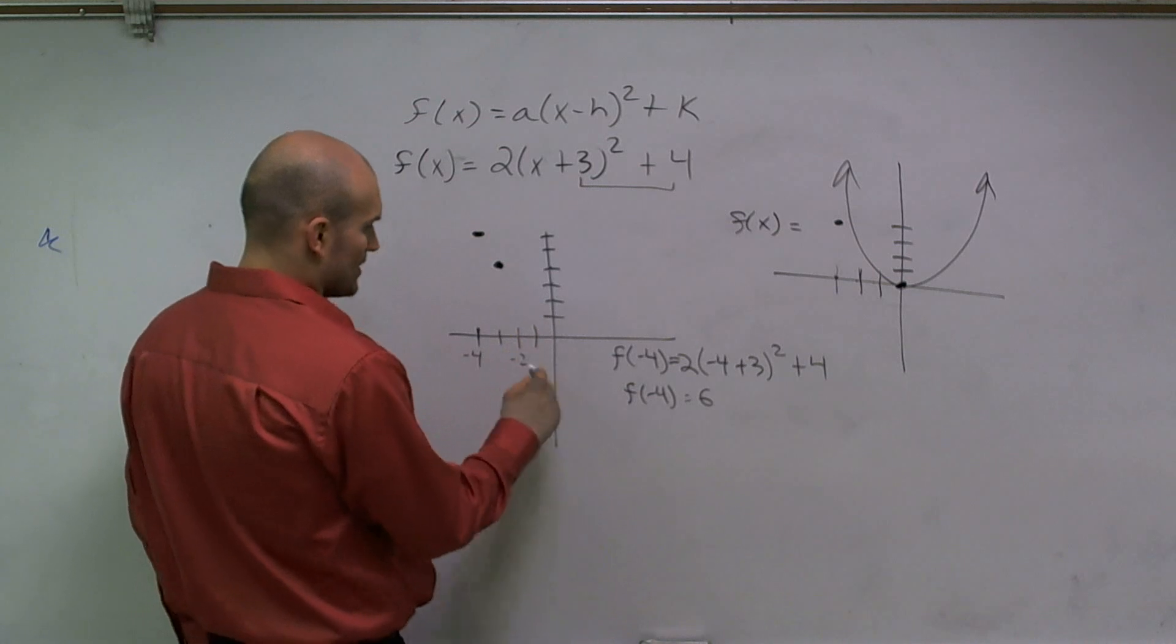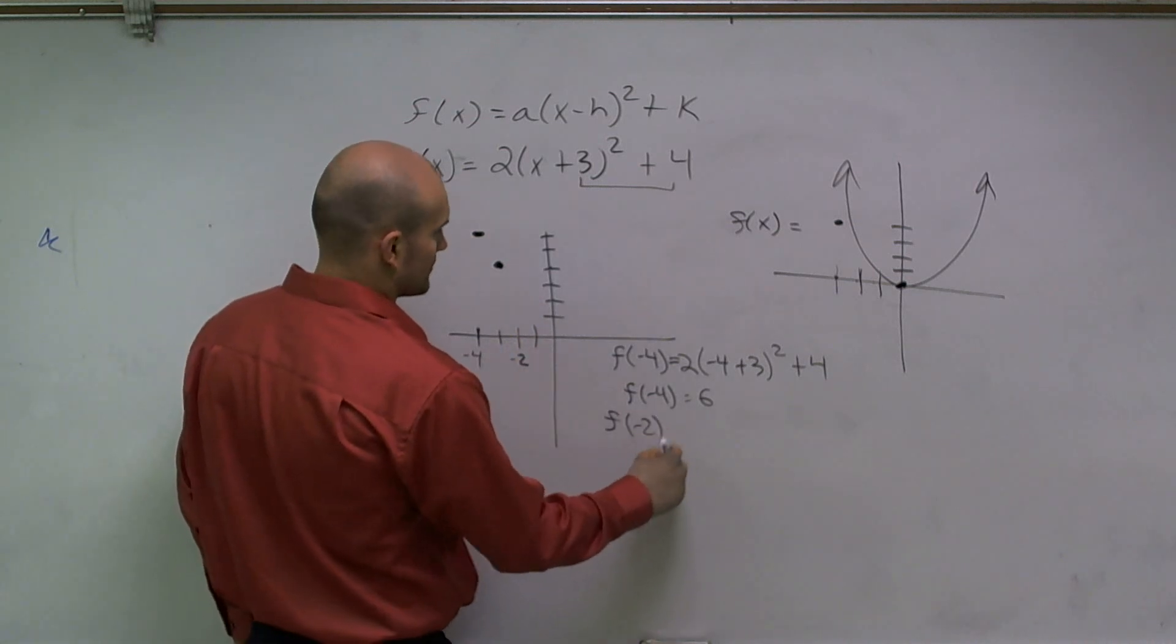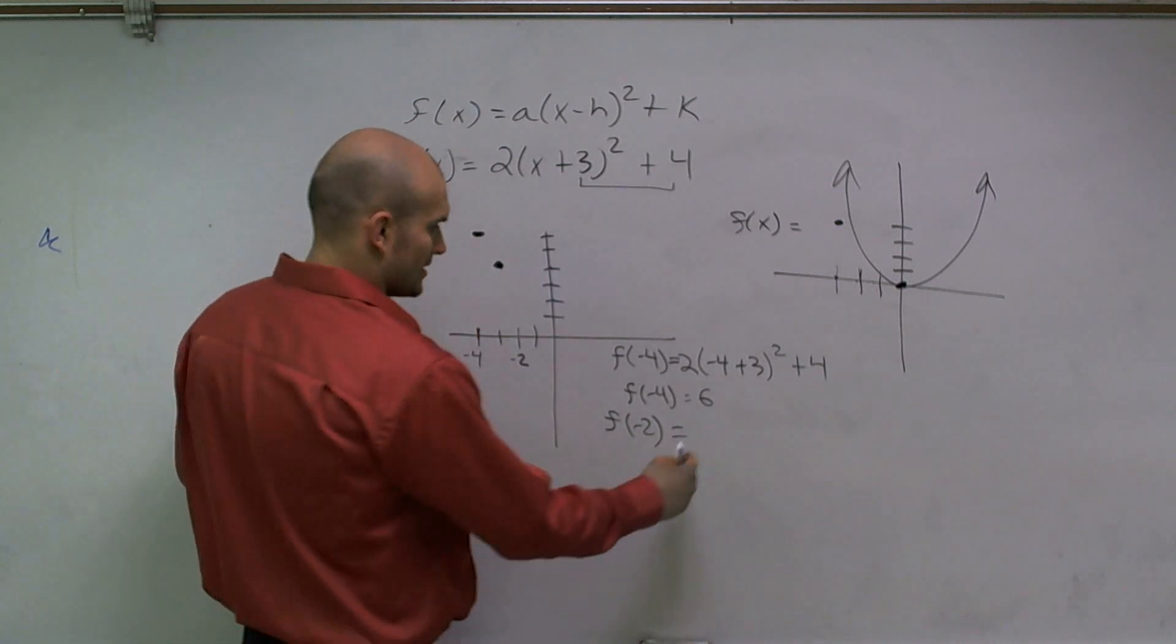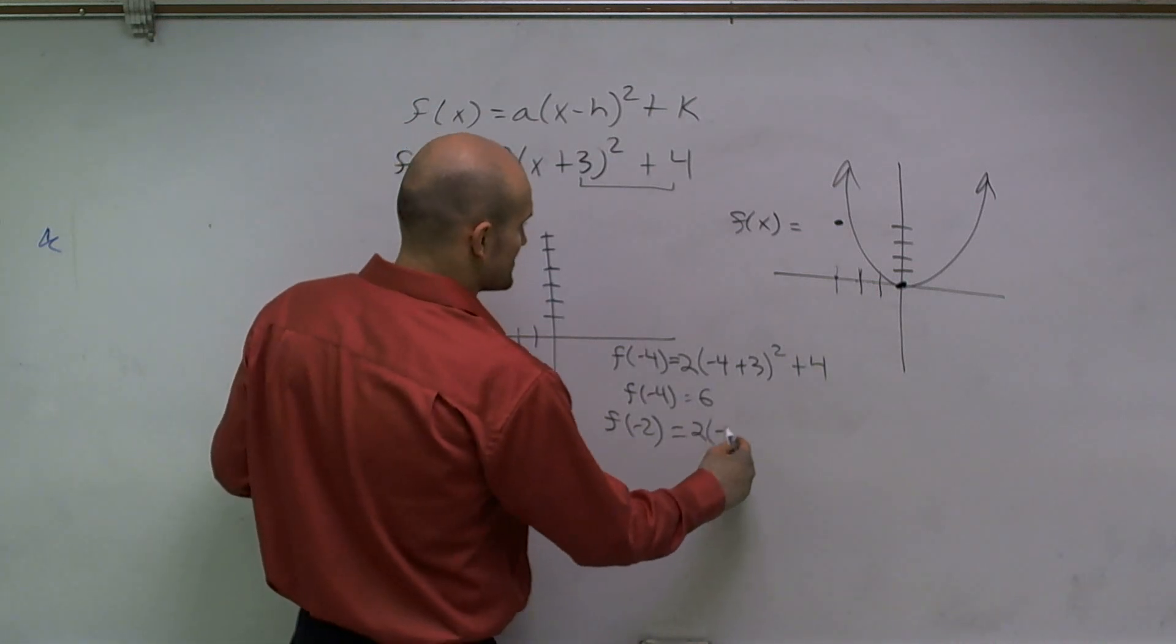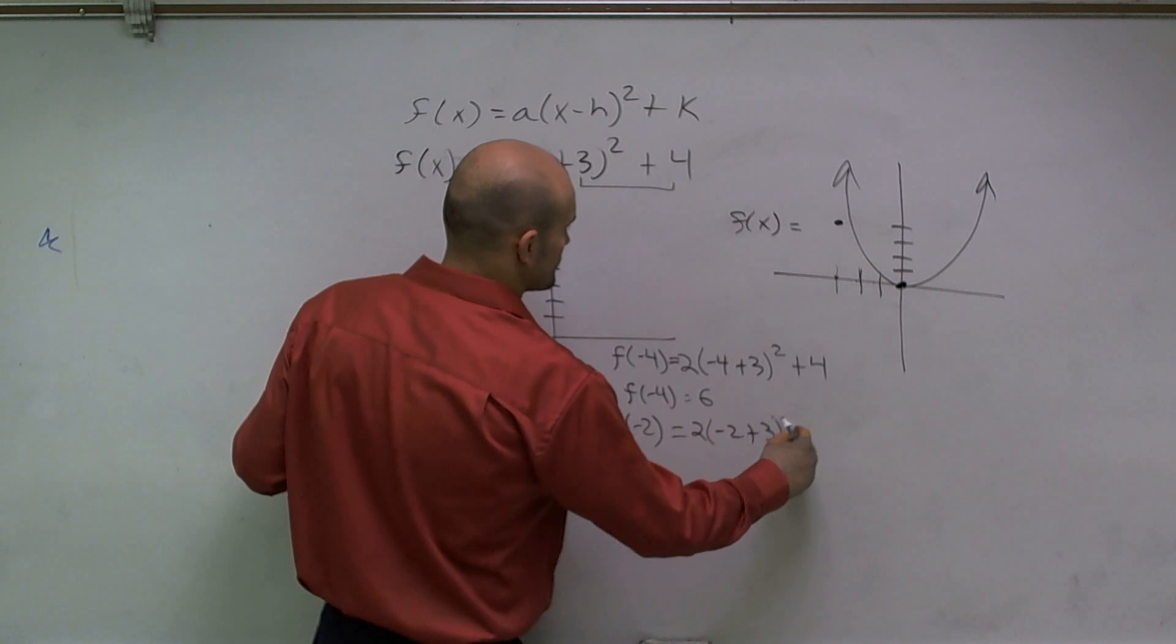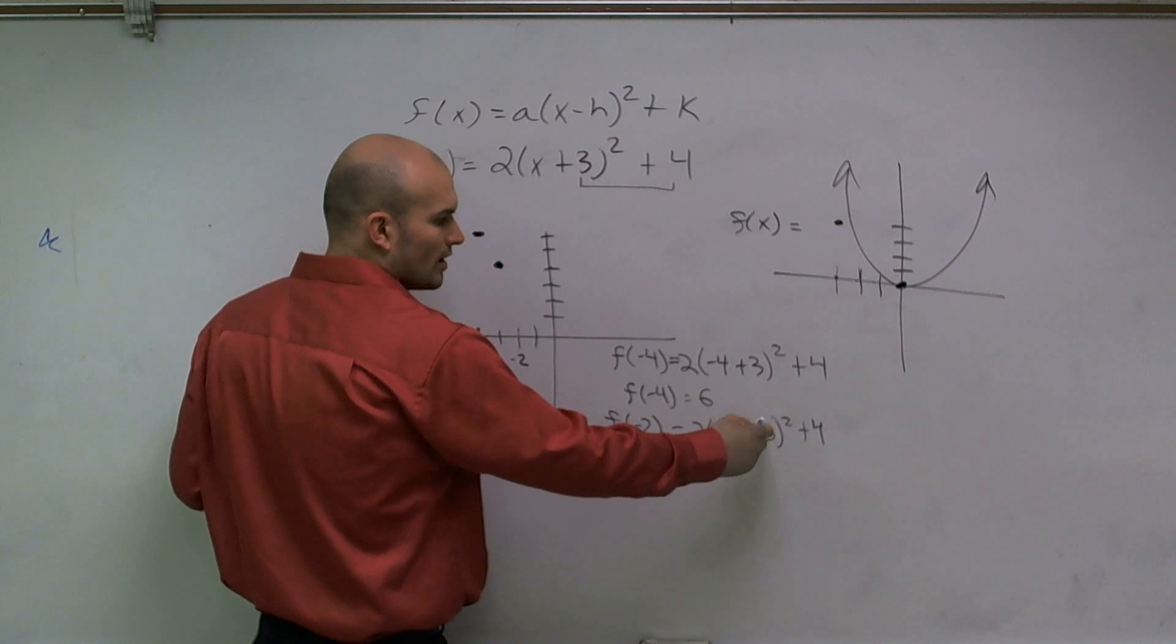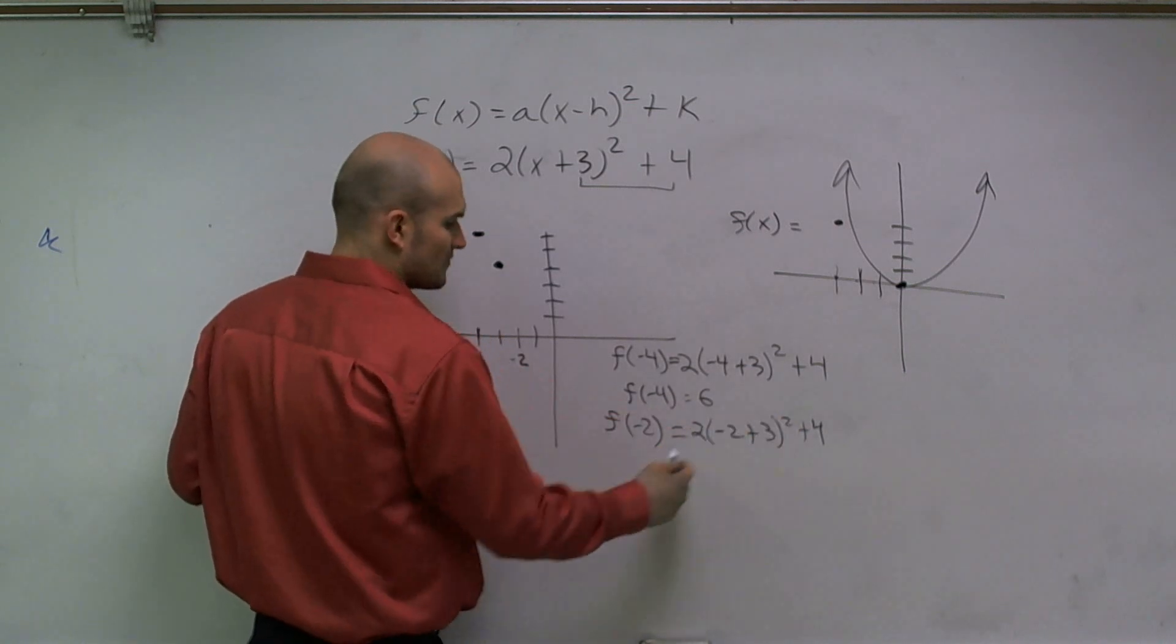Then let's now evaluate f of negative 2. And I know the answer is going to be 6, but let's just work at it. 2 times negative 2 plus 3 squared plus 4. If you notice, inside of these are both going to give you 1. 1 squared is 1. 1 times 2 is 2. 2 plus 4 is 6.